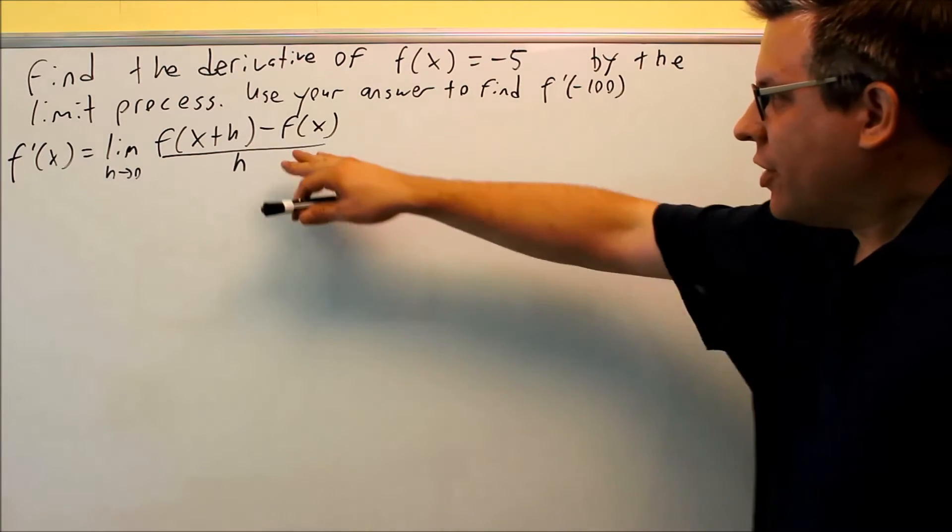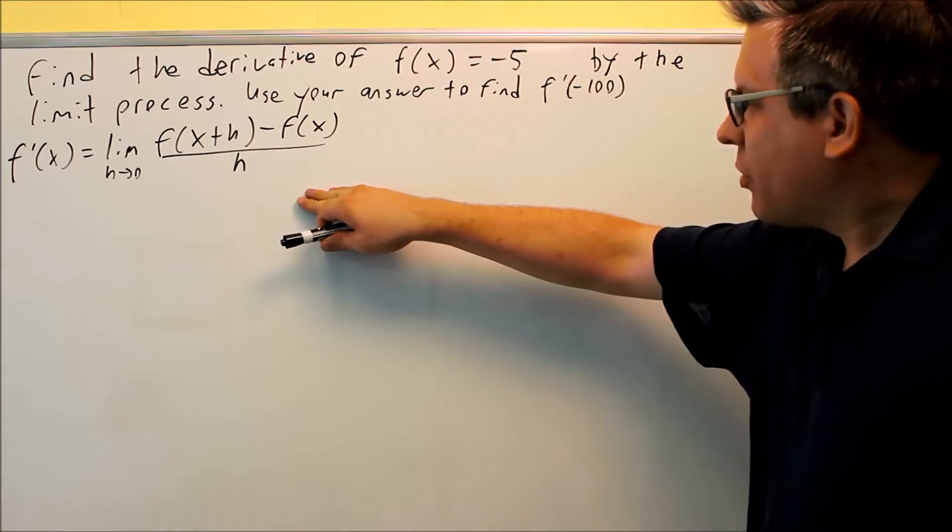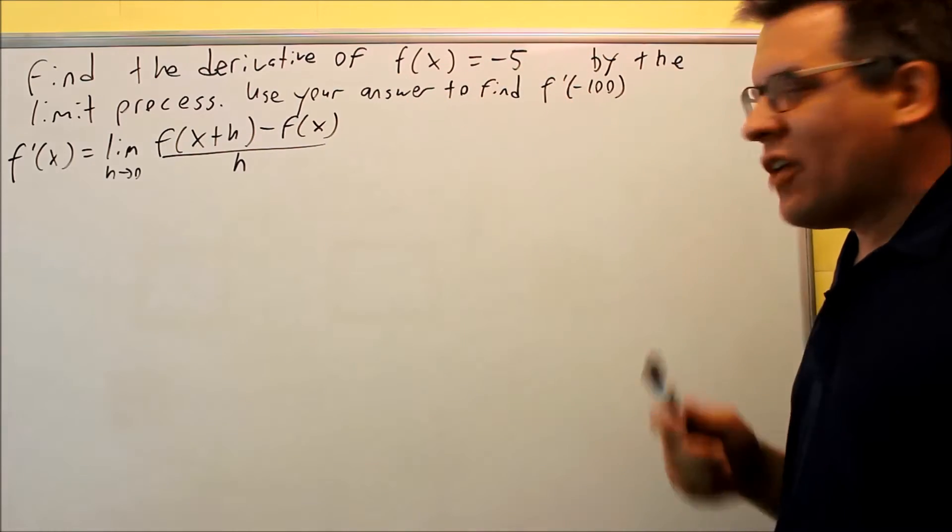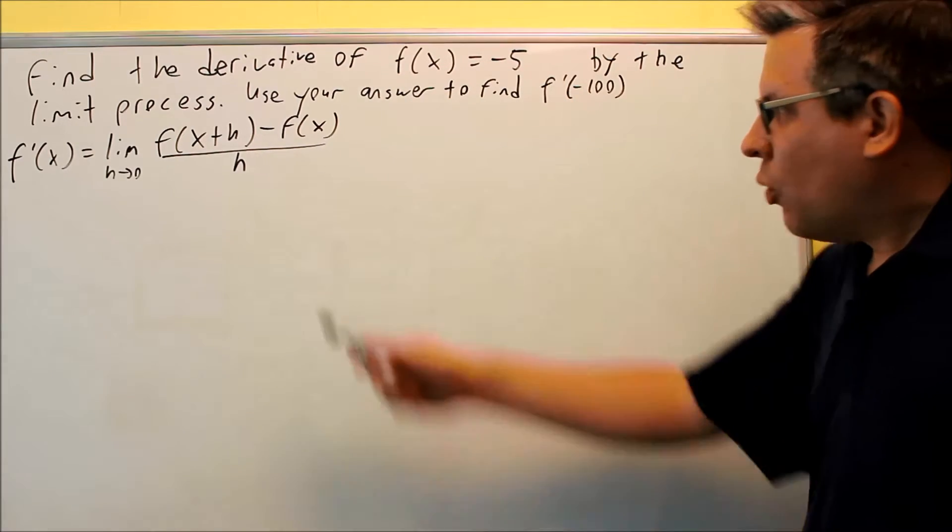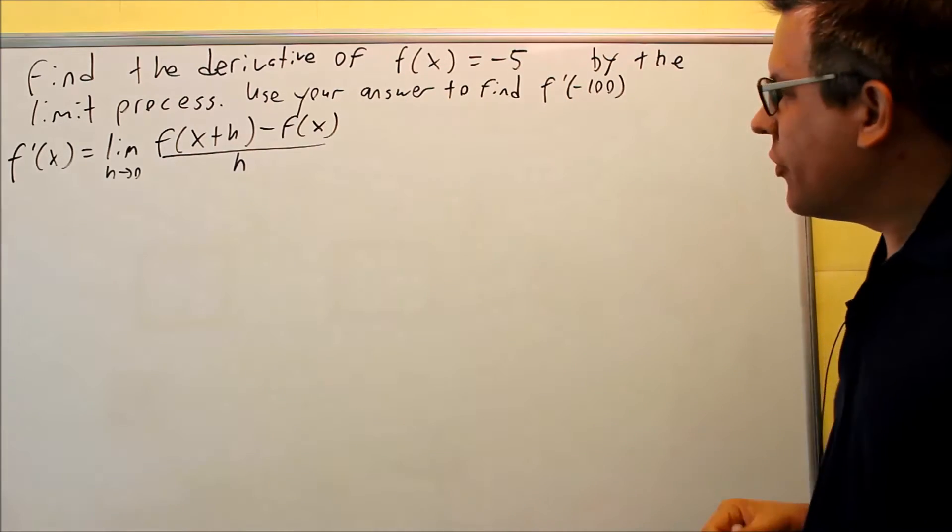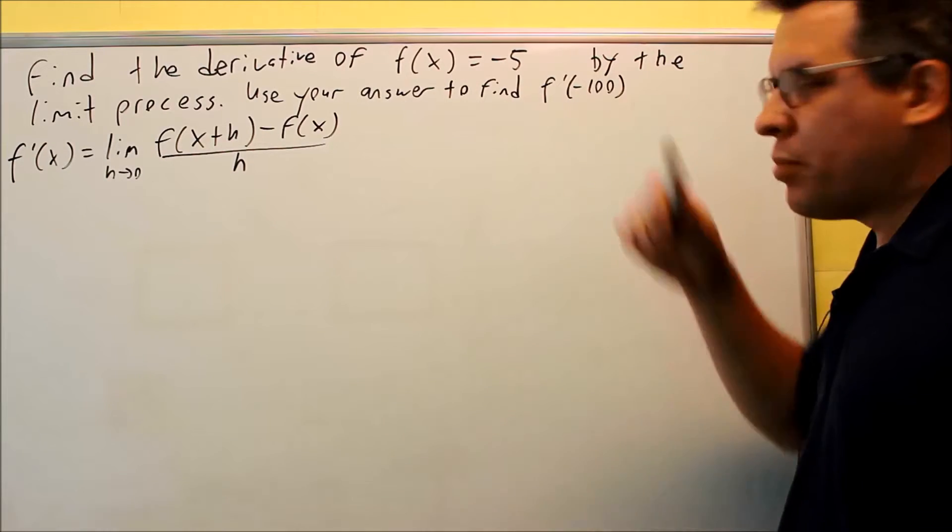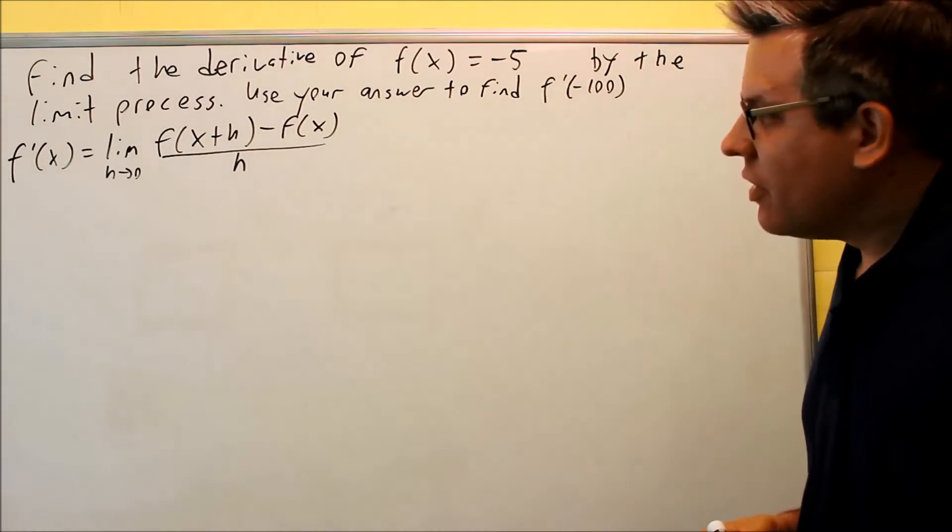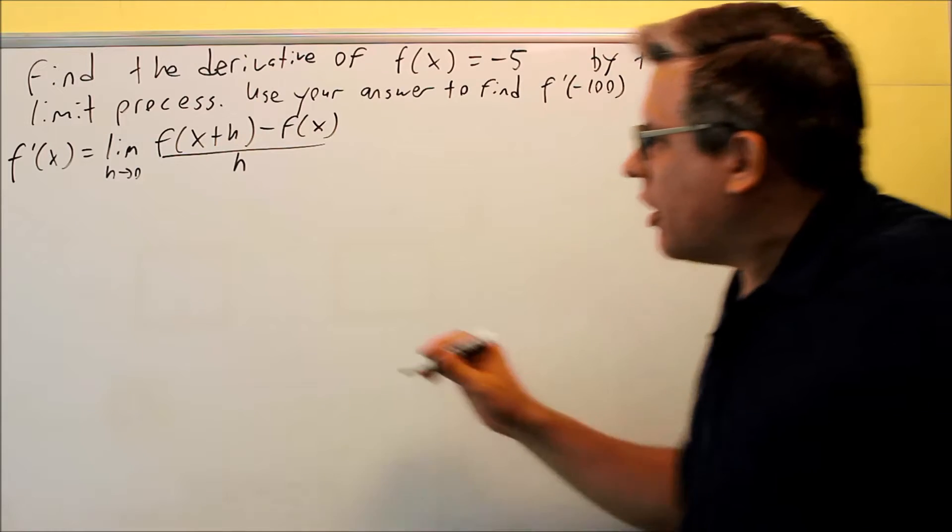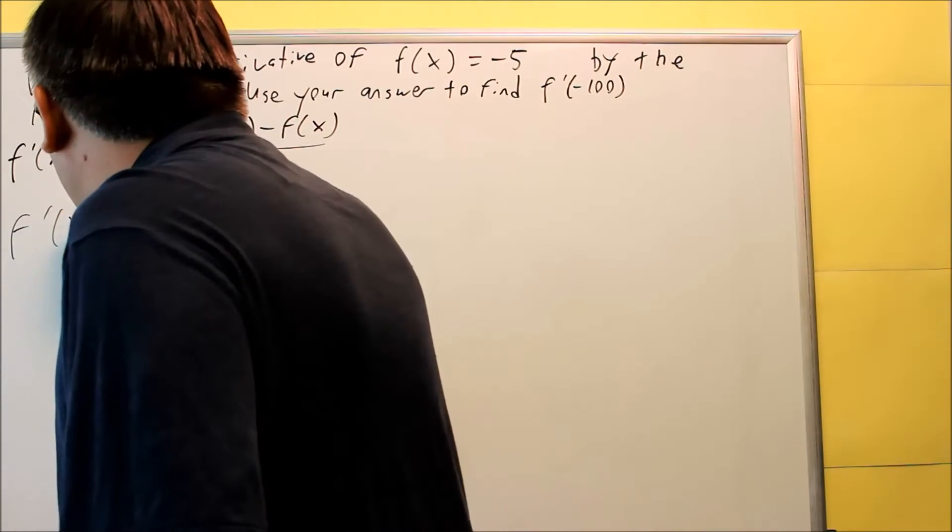All right, we have another one where we want to find the derivative using the limit process. This time our function is f of x equals negative 5. We're going to follow this formula to find the derivative, and then once we're done with that, we'll plug in negative 100 to get the answer. So first we're going to do the derivative following this process.